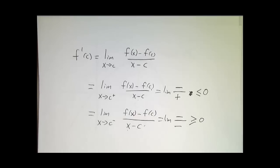So if the limit exists, the limit has to be less than or equal to zero, and it has to be greater than or equal to zero. What's the only way for something to be less than or equal to zero and greater than or equal to zero? It has to be zero.